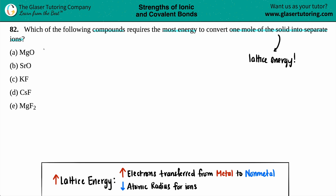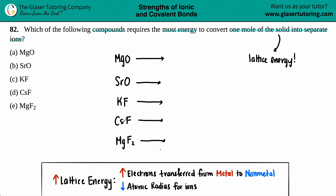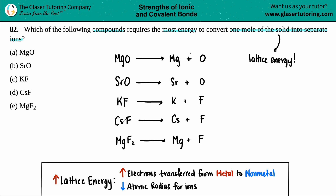The first thing I'm going to do is rewrite what these ions are. So we have MgO, SrO, KF, CsF, and MgF₂. Let's do our five arrows and break each into its ions. We have magnesium plus oxygen, strontium plus oxygen — we're just severing all ties between each ionic compound. We have potassium and fluorine, cesium and fluorine, and magnesium and fluorine.